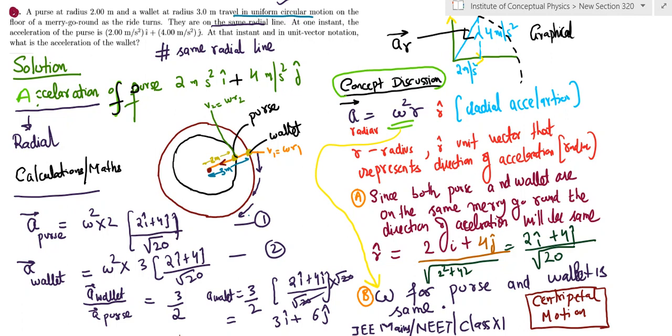So the unit vector which has been used is common. Divide the two and you get that the acceleration of the wallet is three by two times the acceleration of the purse. Tricky numerical because it can lead you to believe that V square by R is a correct approach and also because of involvement of vectors.